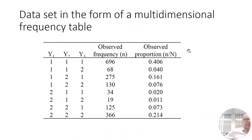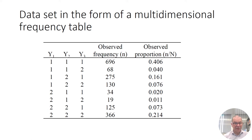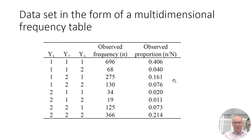Here you see the dataset in the form of a multi-dimensional frequency table. The dataset itself also looks like this: three columns with the three y variables, and then the frequency count indicating how many persons we have in each pattern. You can see that the most likely responses are the 1-1-1 response and the 2-2-2 response, which are the consistent responses. About 700 people have the 1-1-1 pattern, that's about 40%. And 366 persons have the 2-2-2 pattern, which is slightly more than 20%.